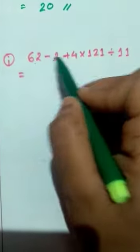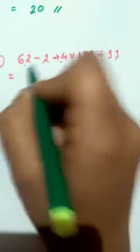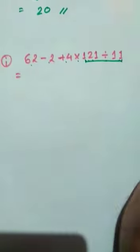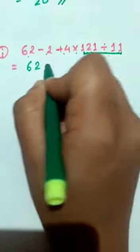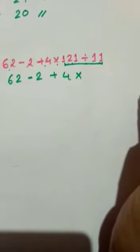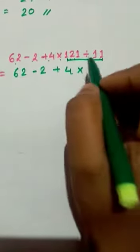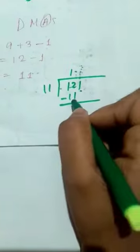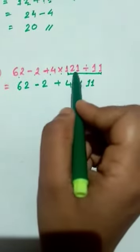Now I'm going to show question (i): 62 minus 2 plus 4 into 121 divided by 11. Which do we do first? Division work first. If you have learned the table of 11, you know 11 times 11 is 121, so 121 divided by 11 equals 11. You can also verify by long division: 12 minus 11 is 1, bring down 1, giving 11.